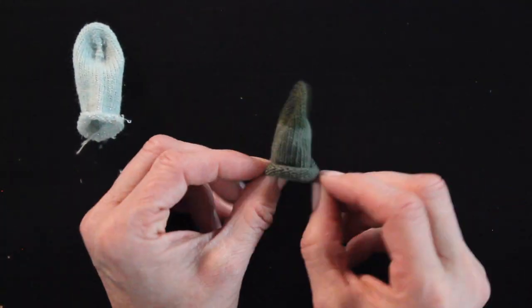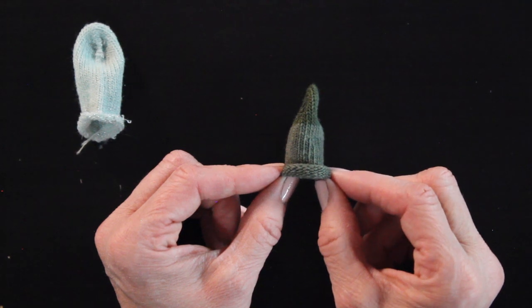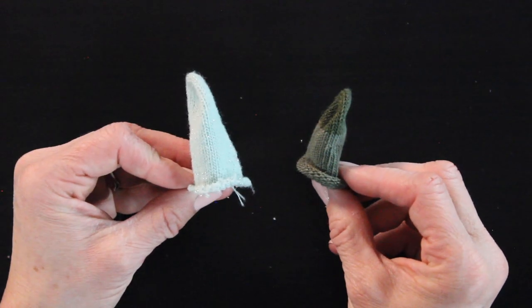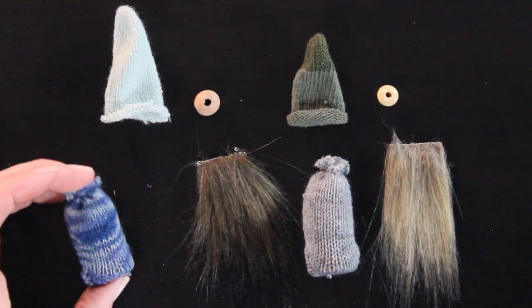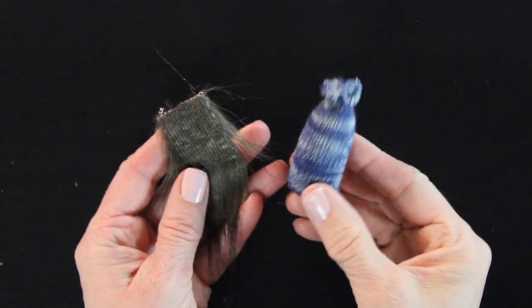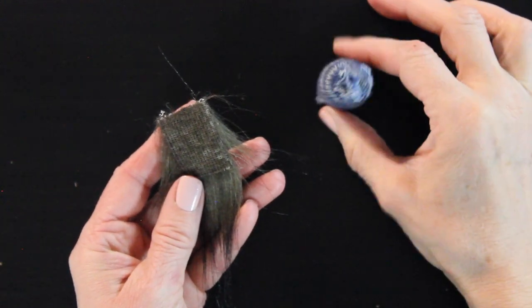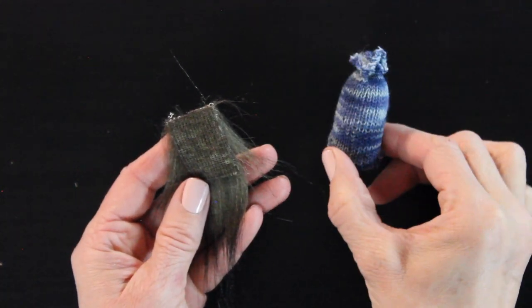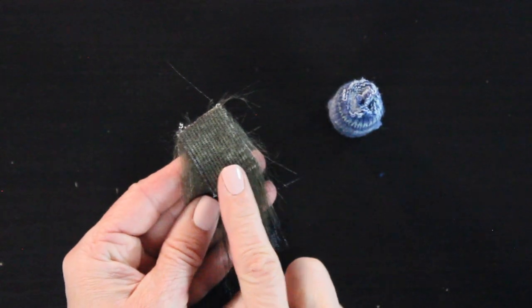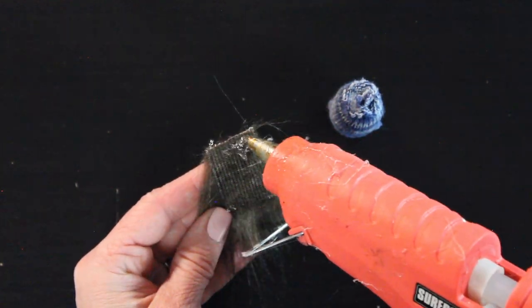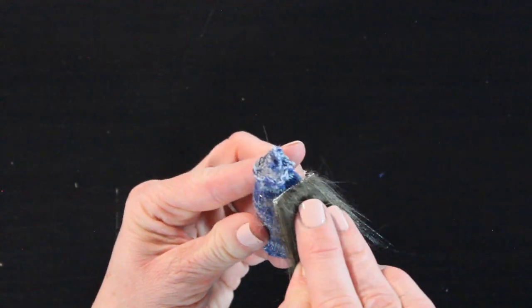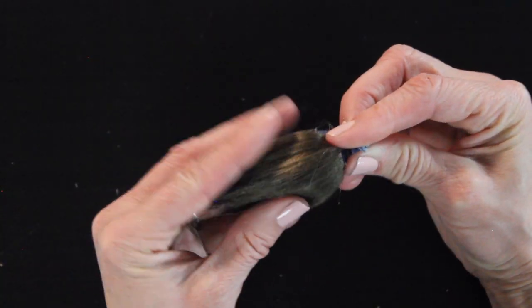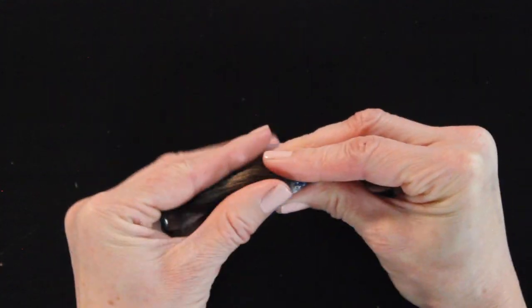Now it's time to assemble our gnomes. So I line them up how I'm going to put them together. What you're going to do is take the gnome body and I decide which way the front is going to be. And then I take my beard and I'm going to add some glue to the back, covering all of the back, making sure you get the edges really well. And then you're going to lay it onto the front of your gnome and smooth it down and hold it until the glue sets. And I like to make sure that it's laying flat against the sides.